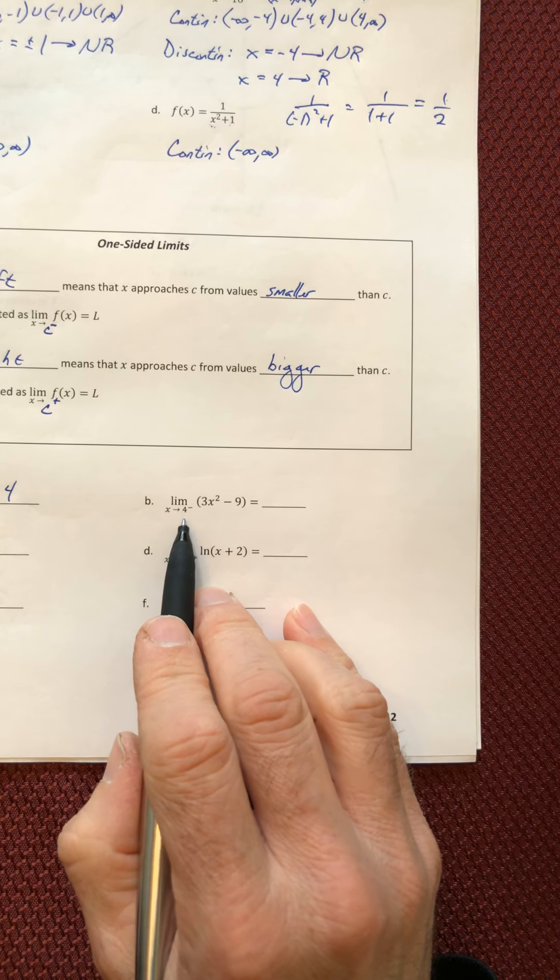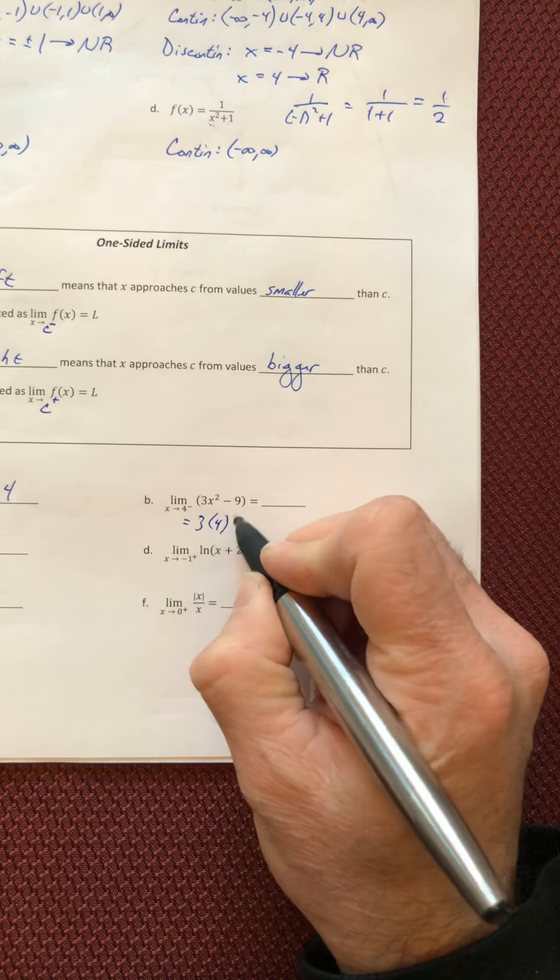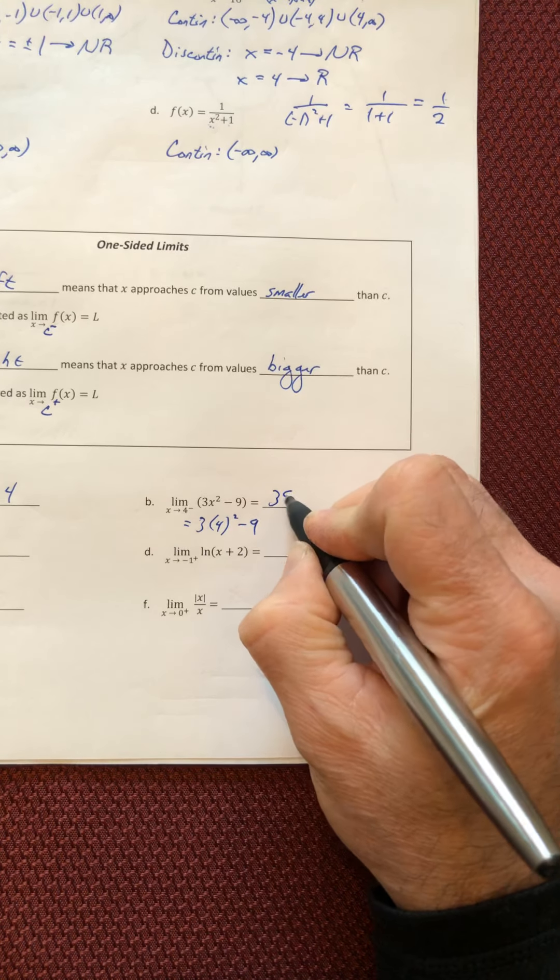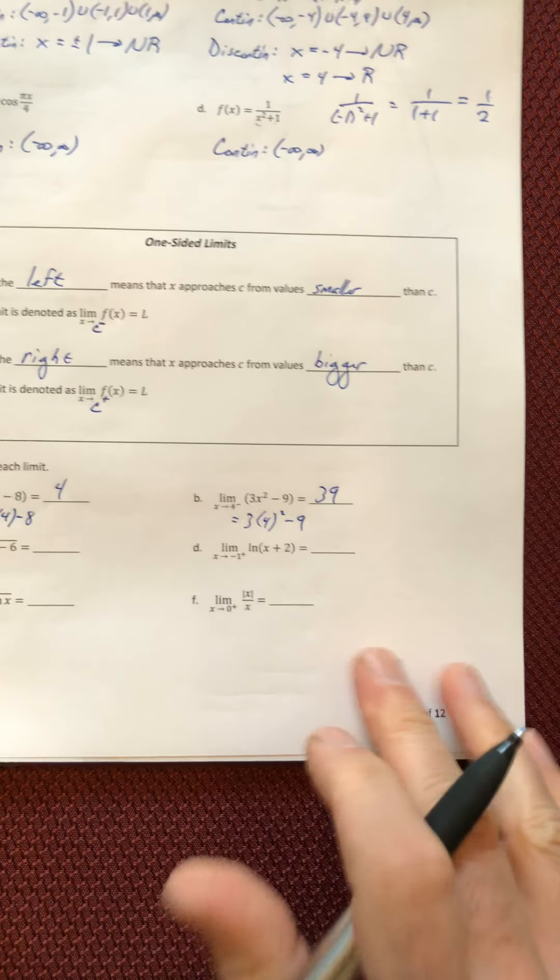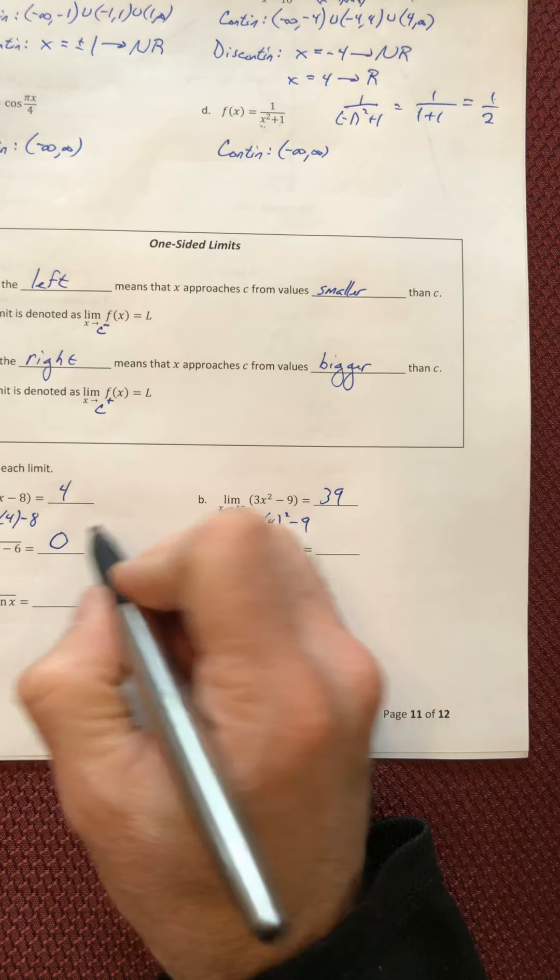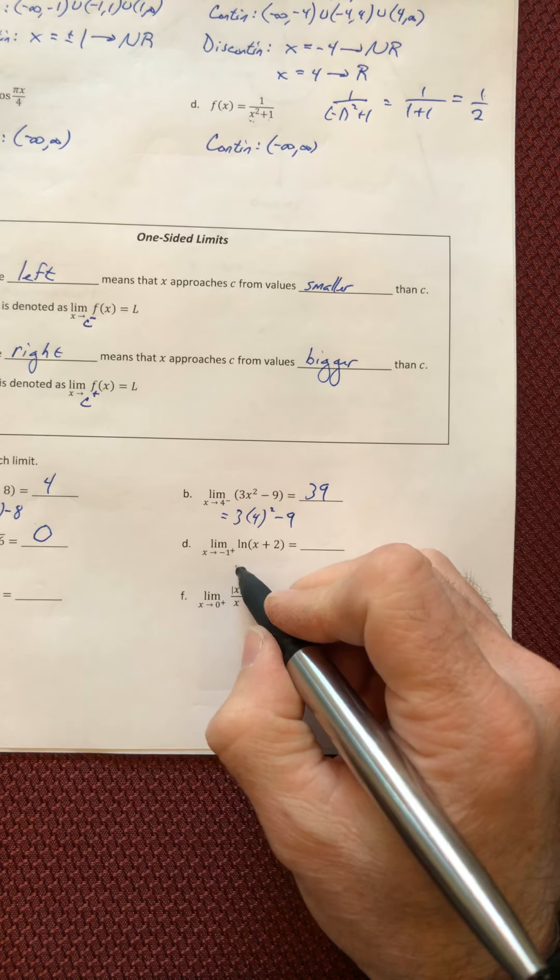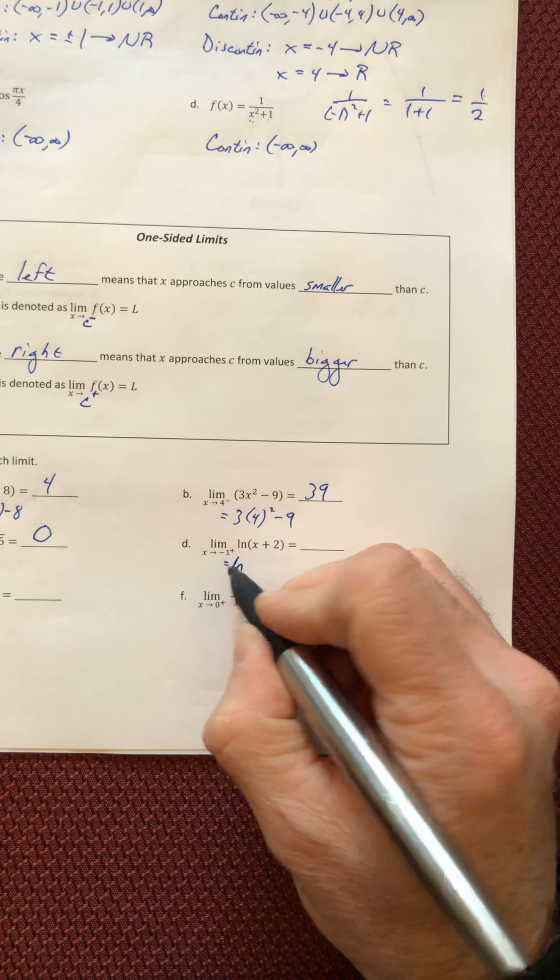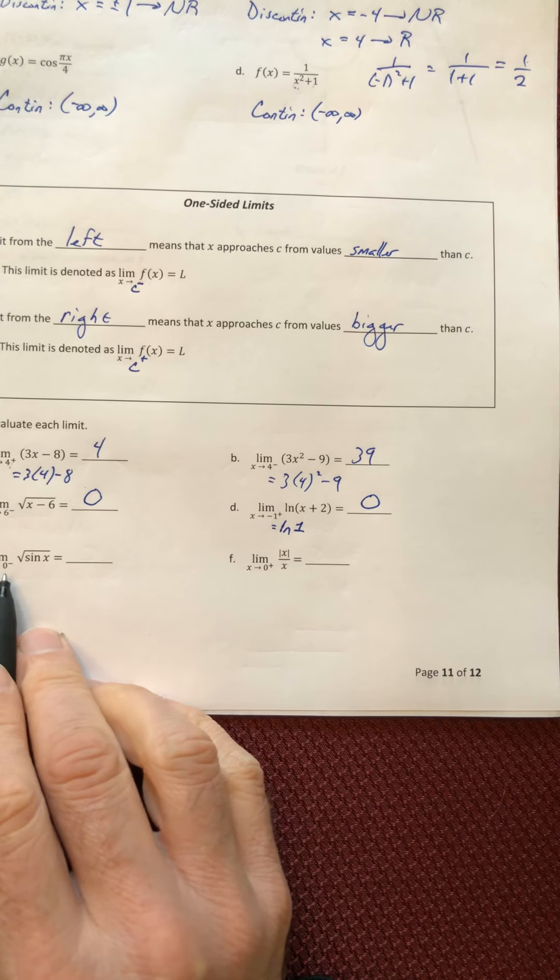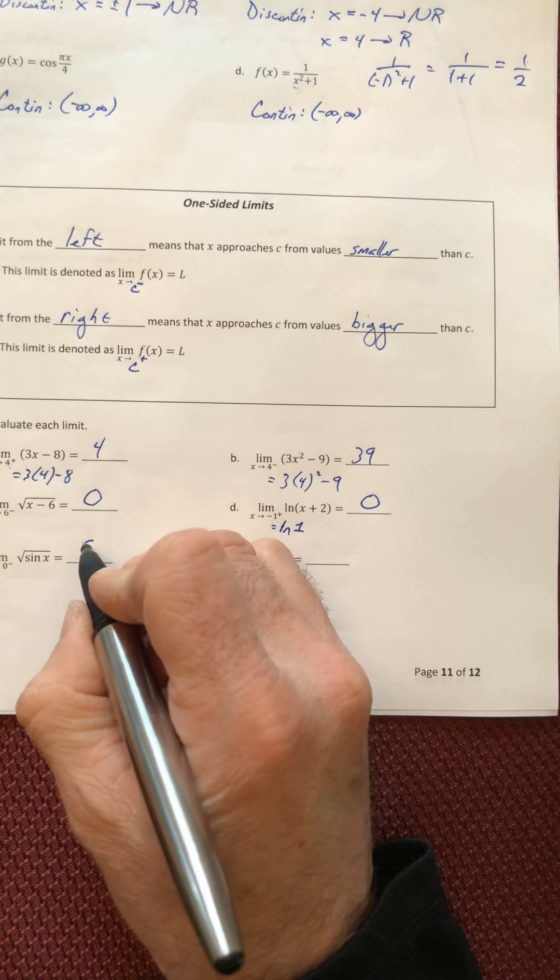So on B, you have four from the left. If you plug that in, that's going to give you a result and it comes out as 39. So this one, plug in the six. Six minus six is zero, square root of zero is zero. On D, you can plug in the negative one, and you get ln of one, which is zero. On E, plug in the zero. Sine of zero is zero, square root of zero is also zero.